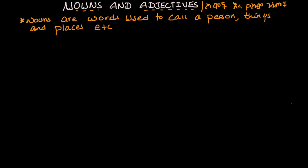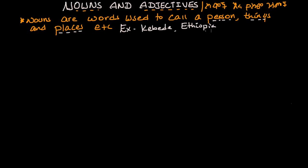For example: person, thing — these are some of the categories. When you have a noun, it names something specific.